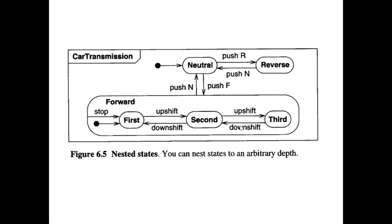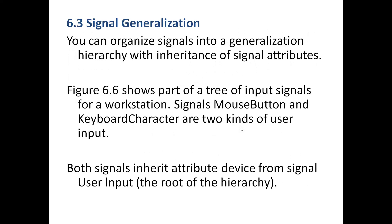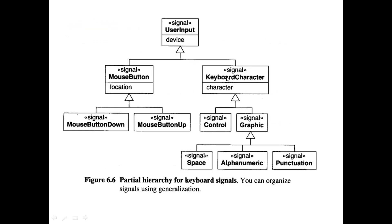The difference between nested and expanding states should now be clear, along with entry and exit activities. We also covered signal generalization, where you organize signals into a generalization hierarchy with inheritance of signal attributes. For example, user input can come from a mouse button or keyboard character. A mouse has two buttons: down and up. Keyboard characters can be control or graphic; graphic includes space, alphanumeric, or punctuation.